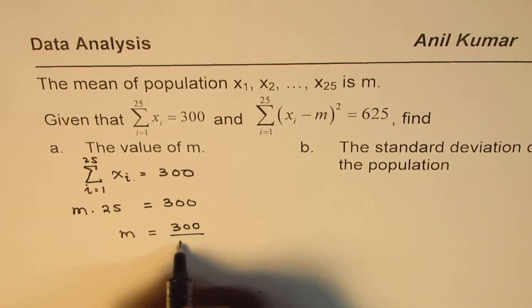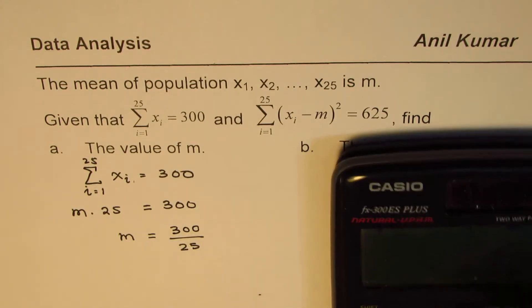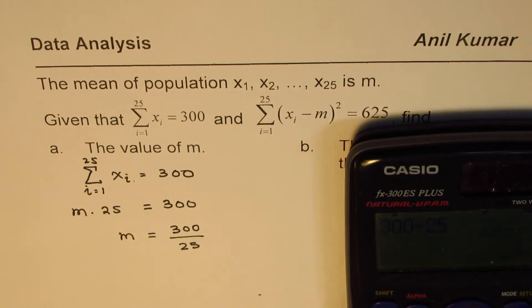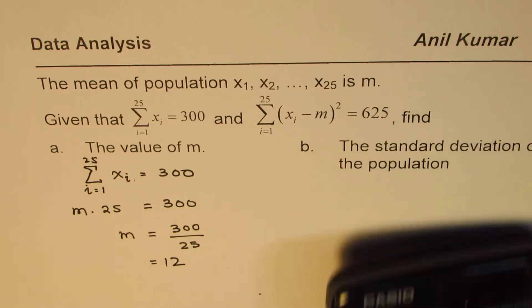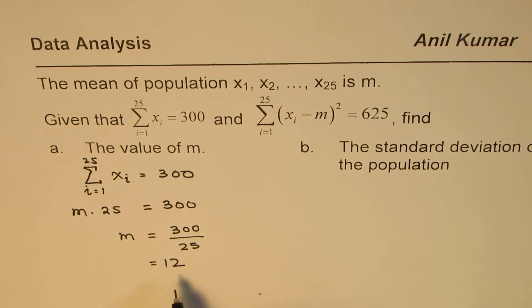So we can divide 300 by 25, so we get 12. So 300 divided by 25 gives us 12. So the value of m, which is the mean for the given data, is 12.